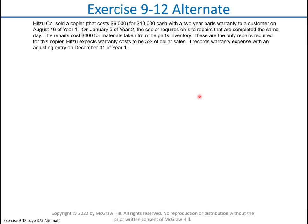In Exercise 9-12 we're going to look at warranties. This company sold a copier for $10,000; it costs them $6,000. They're offering a two-year warranty to the customer. In the next year the copier required some repairs which cost $300. They expect warranty costs to be five percent of their sales, and they'll record this with an adjusting entry at the end of the year.